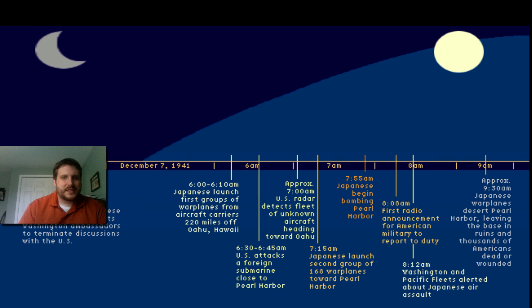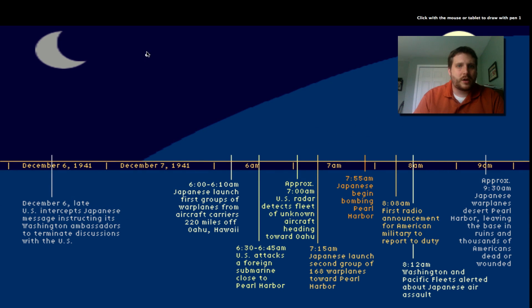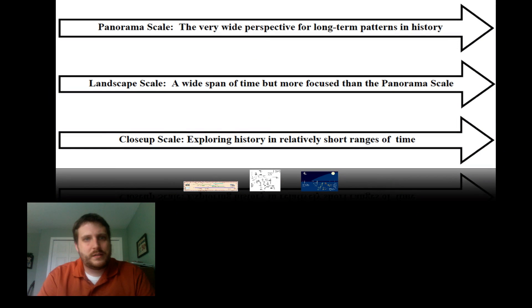Let's look at one more timeline. And this timeline is about the attack on Pearl Harbor. And if you look at this, the timeline is a matter of hours. It starts around midnight and goes to about nine o'clock a.m. So we're talking about around nine hours or so. And you can see here we've got on late December 6, the US intercepts Japanese message instructing its Washington ambassadors to terminate discussions with the US. Then you've got here at six o'clock, the Japanese launched the first groups of warplanes from aircraft carriers. So you're getting a much more complete view of this one event. You don't know what happened before this event. You don't know why the Japanese are attacking. So you can see you've seen three different scales here, three very different scales with timelines.